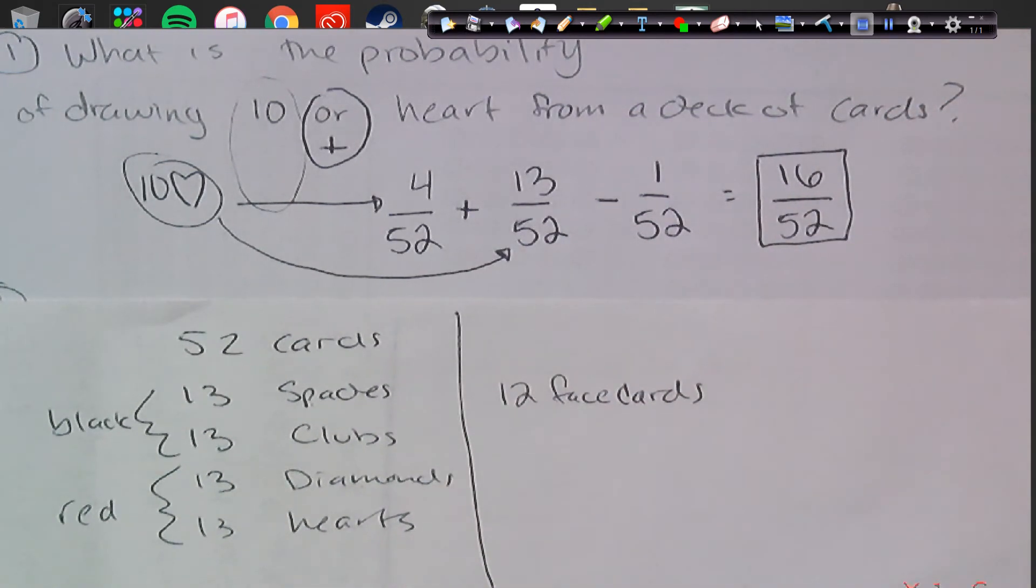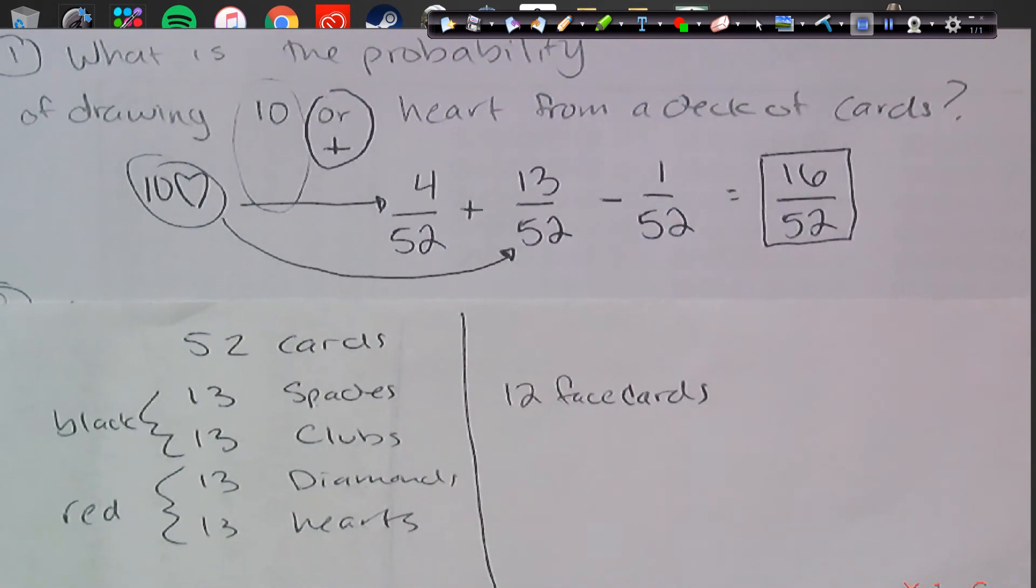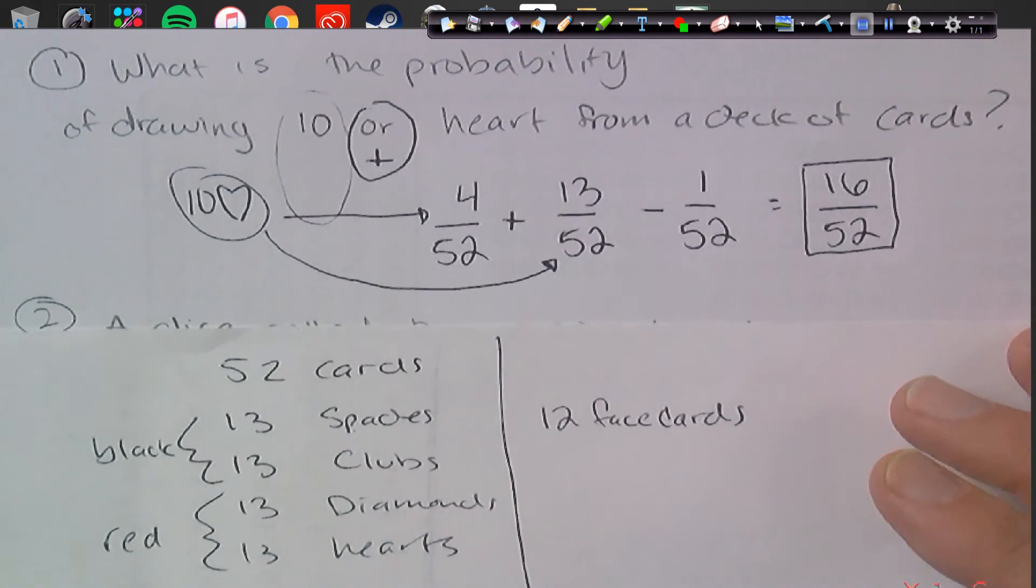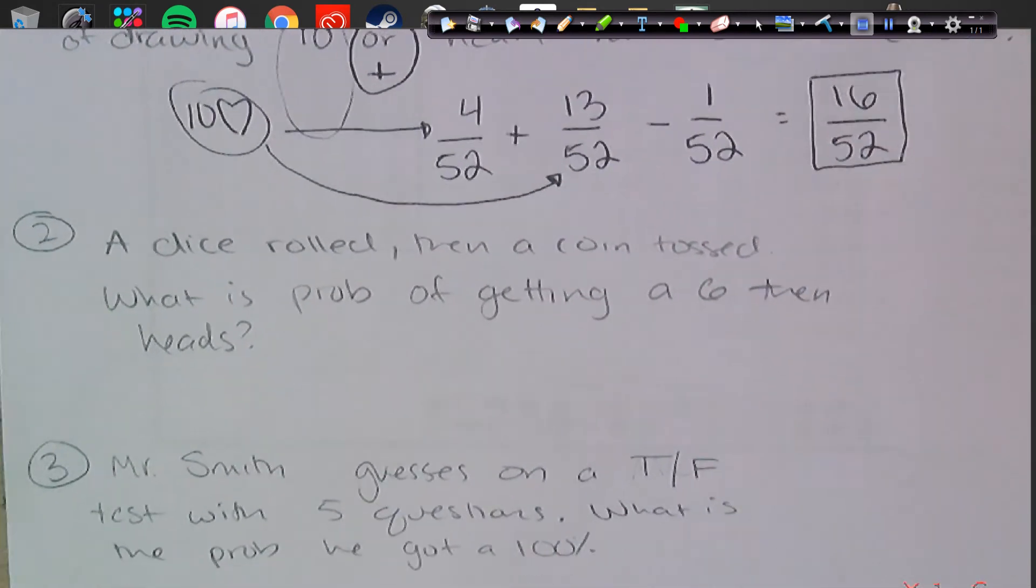Either one of those would work. But we end up with 16 out of 52 cards for our final answer. So that's a pretty tricky question right there. Again, common sense and precision is how we do a lot of probability questions.